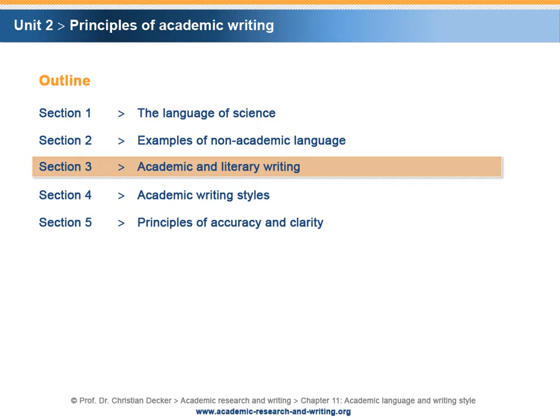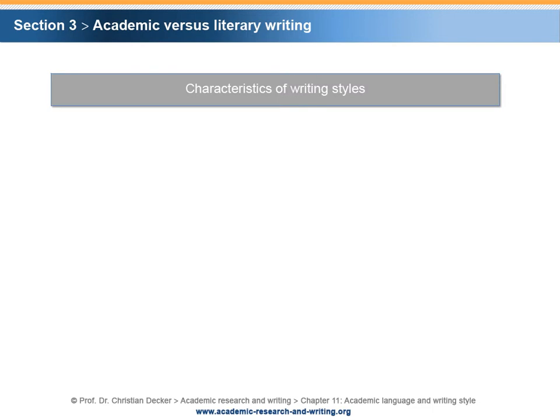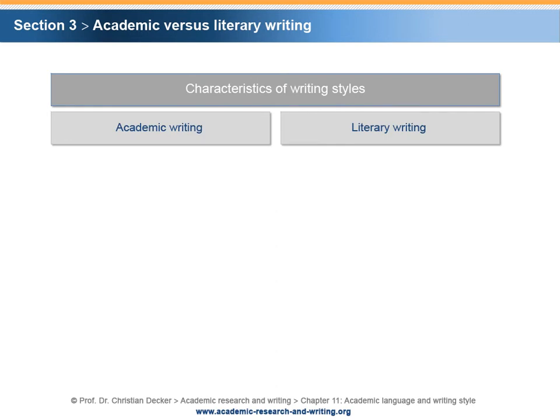Section 3 – Academic and literary writing. A good way to define academic writing is to differentiate it from its counterpart literary writing by analyzing the characteristics of the different writing styles. A good criterion for recognizing and applying academic writing is to follow the scientific principles. The scientific principles are accuracy, completeness, clarity, comparability, and materiality.